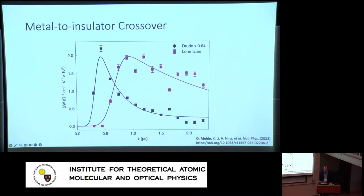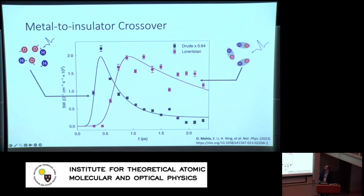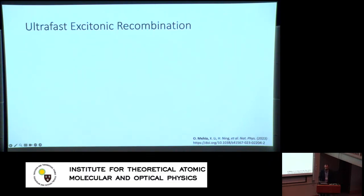An audience member asks whether these kinetics could have been obtained by photoluminescence. The speaker responds: no, because there are no signatures of these states in equilibrium spectroscopy. Additionally, even if they appeared in photoluminescence, you wouldn't know whether the signal at that frequency was increasing due to more free carriers or more excitonic carriers, since they overlap in frequency — which is exactly the problem the terahertz approach solves.